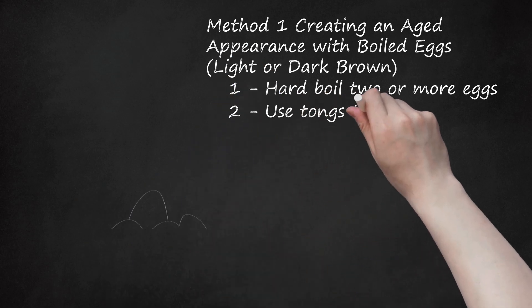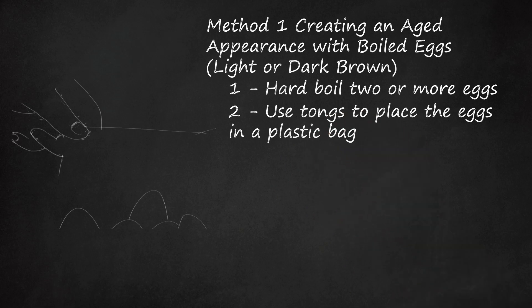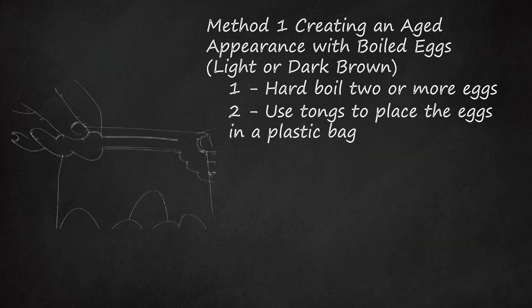Step 2: Use Tongs to Place the Eggs in a Plastic Bag. Transfer the eggs into a plastic bag, preferably one that can be sealed, such as a Ziploc. Use tongs or another utensil to pick up the eggs, since they will be hot. If you don't have a bag that can fit your copper object comfortably, use Tupperware, a bucket, or any other container that can be sealed shut or have a lid placed over it. Large containers will require a large amount of eggs.